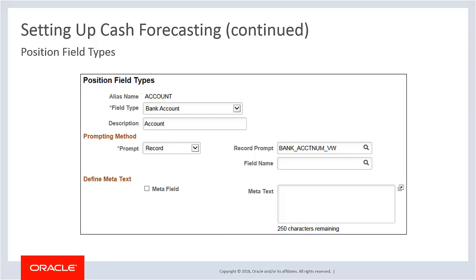Use the position field types page to set up user-friendly field names, also known as alias names, which can be associated with prompt records and meta SQL. Position field types are used to map to source record fields, define position SQL criteria, and process cash forecast results.